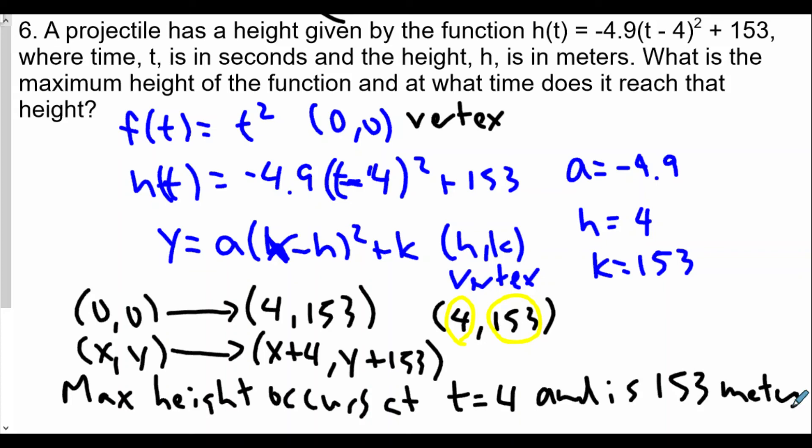So the vertex tells us when and what the maximum or minimum is going to be. Here we look at vertex form, find the original vertex was (0, 0), and it was shifted right 4 and up 153 units, giving our maximum height. We could use a graphing calculator, but we don't need to because our knowledge of parabolas and vertex form gives us the answer directly.